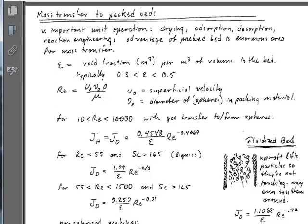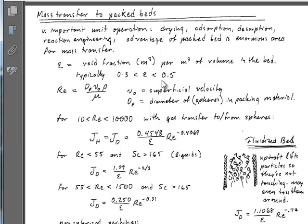This is an example related to mass transfer in packed beds, a very common unit operation related to drying, absorption, desorption, and catalysis. We use them because they have enormous area for mass transfer. A key parameter is the void fraction — the volume in the packed bed not occupied by the packing — which is typically greater than zero and less than 0.5.